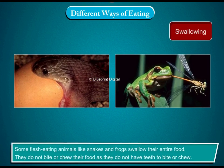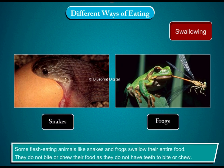Swallowing. Some flesh-eating animals like snakes and frogs swallow their entire food. They do not bite or chew their food, as they do not have teeth to bite or chew.